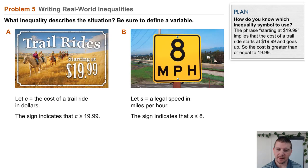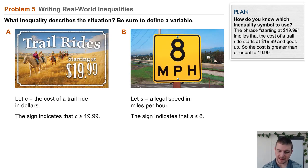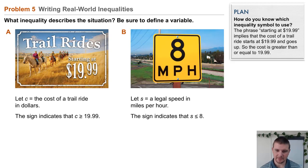Part B: 8 mph. We can let S be a variable to represent a legal speed in miles per hour. This sign indicates that S is less than or equal to 8.